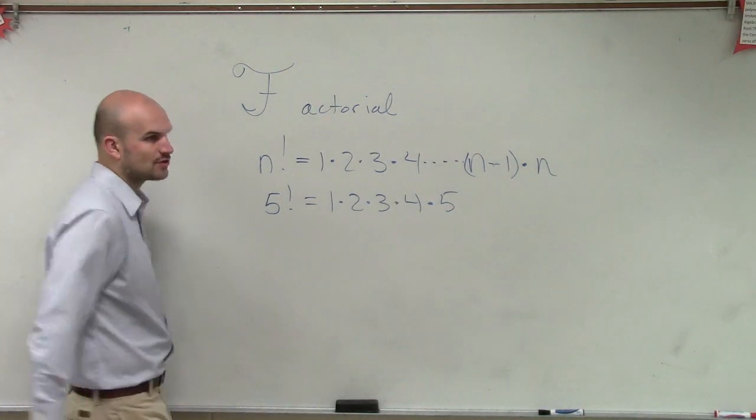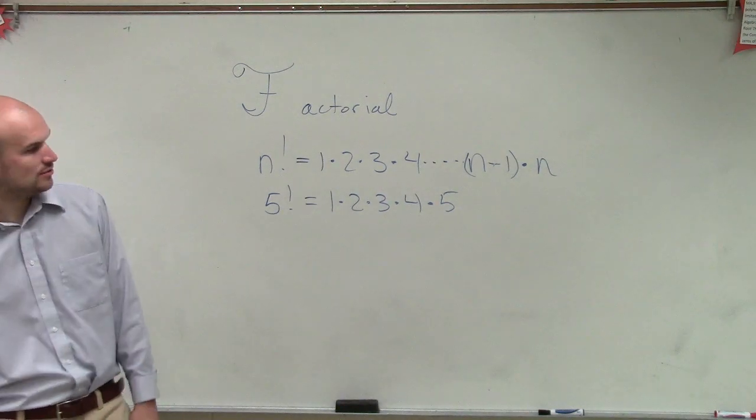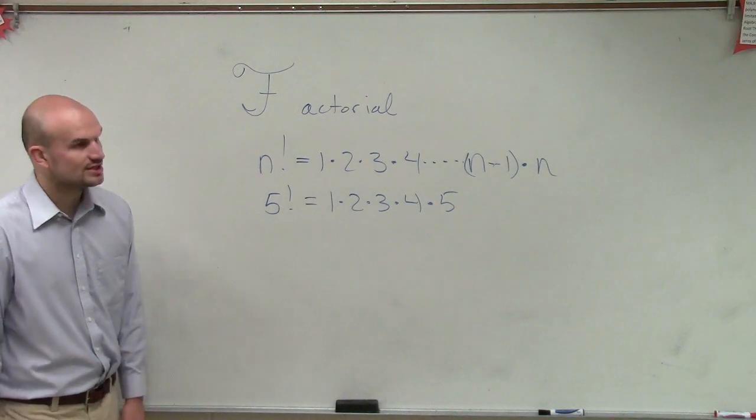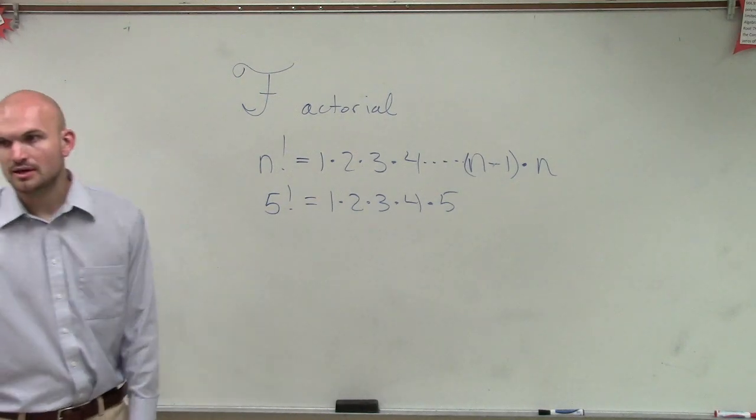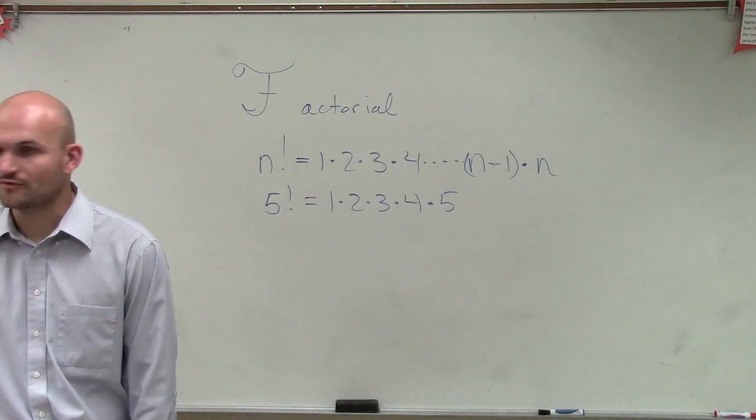So in this case, 5 factorial is 1 times 2, which is 2, times 3, which is 6, times 4, which is 24, and times 5, so 24 times 5.